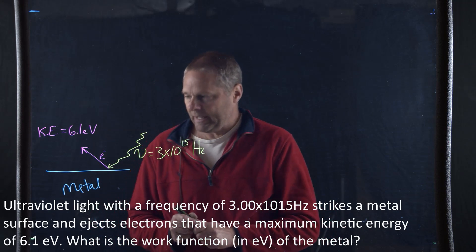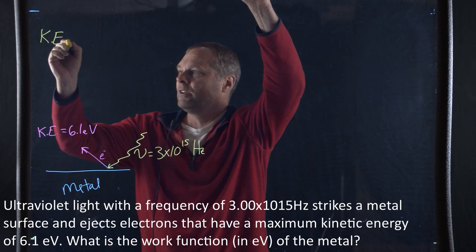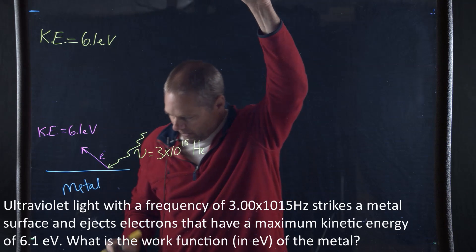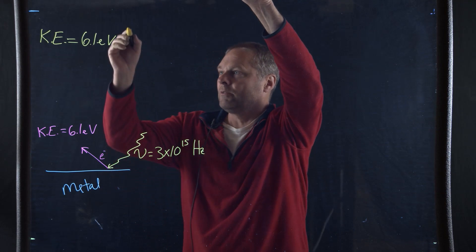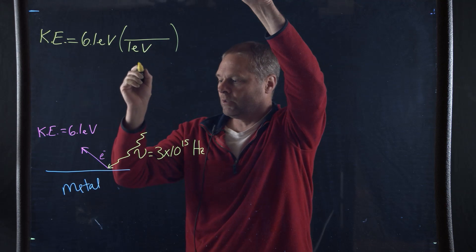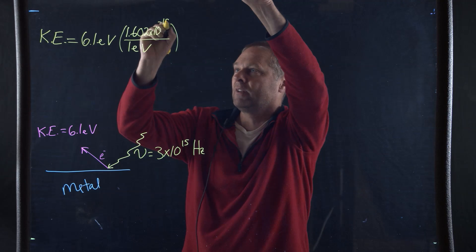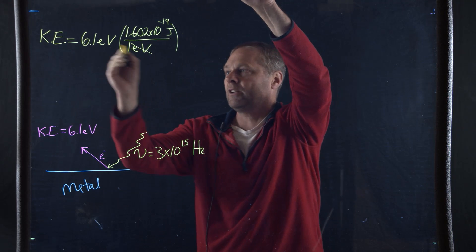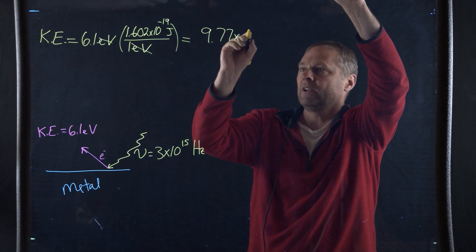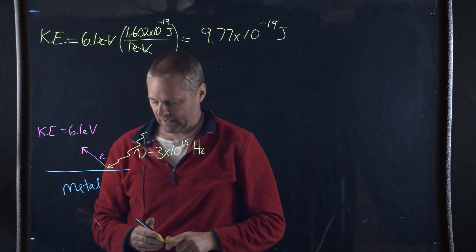The first thing I'm going to do is convert the kinetic energy into joules. We have a kinetic energy equal to 6.1 electron volts. We convert that using 1 electron volt equals 1.602 times 10 to the negative 19th joules. Our electron volts cancel, and we end up with 9.77 times 10 to the negative 19th joules. That's going to be our kinetic energy.